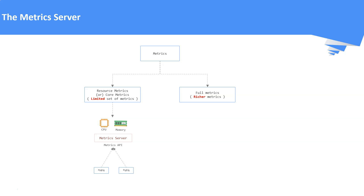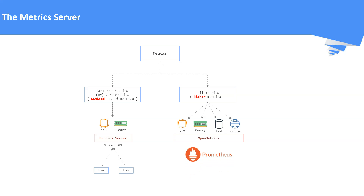The kubectl top command also uses these metrics to display the utilization of CPU and memory. On the other hand, the full metrics pipeline gives access to richer metrics. For this, we need to install an external API component, for example OpenMetrics. OpenMetrics is a CNCF monitoring project. One such example of a full metrics system is Prometheus, which is built on top of OpenMetrics.